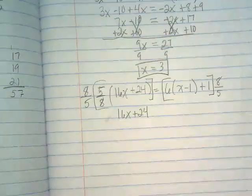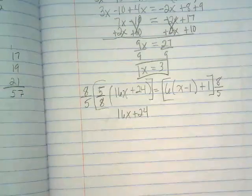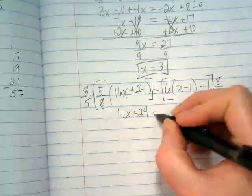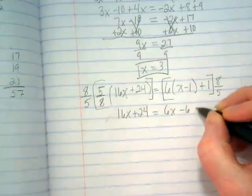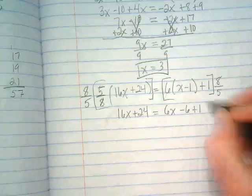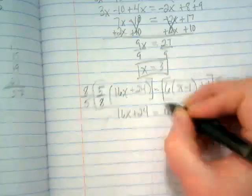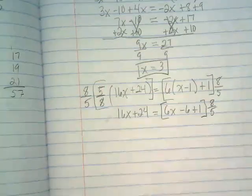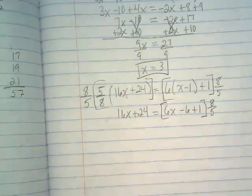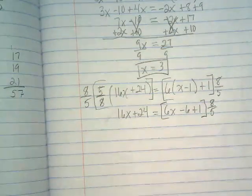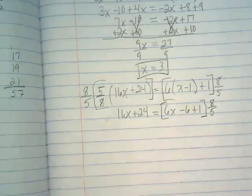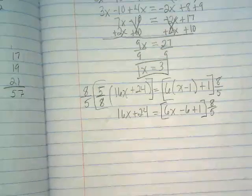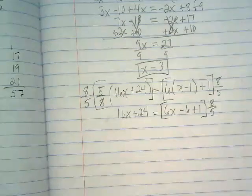That's going to leave 16x plus 24. Now, before I really want to multiply on the right side, I want to distribute what's on that over there. So I'm going to rewrite this as 6x minus 6 plus 1. And I've got that 8 over 5 I still haven't dealt with. And before I multiply, I really want to combine like terms.